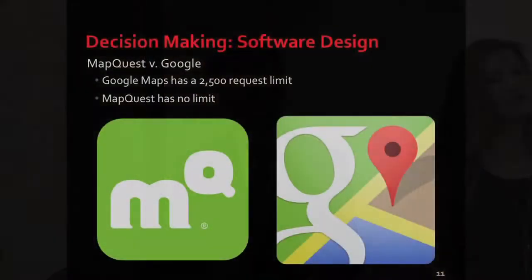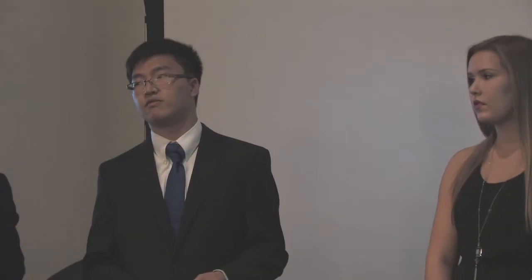A core part of our program is finding the distances between cities, so we have to use a mapping service. We first used Google, which provided the data we needed but has a 2,500 request limit per day — and in testing we actually broke this limit. So we considered MapQuest, which has no limit. It's a bit slower than Google, but that's a tradeoff we were willing to make in order to be as flexible as possible for the user.